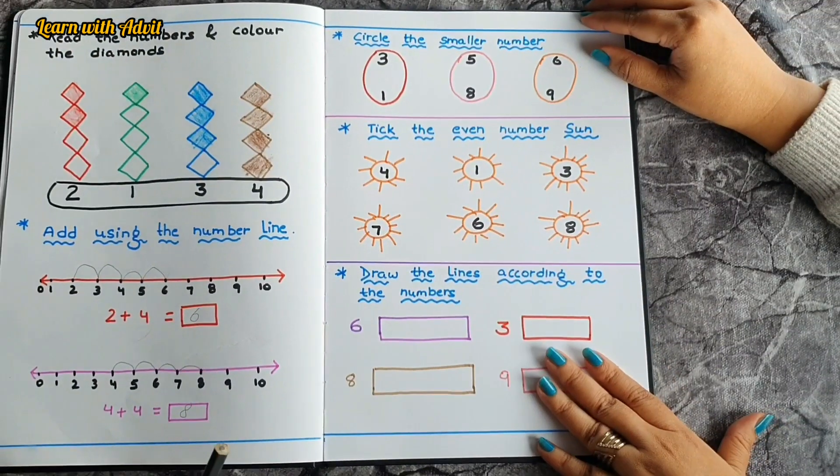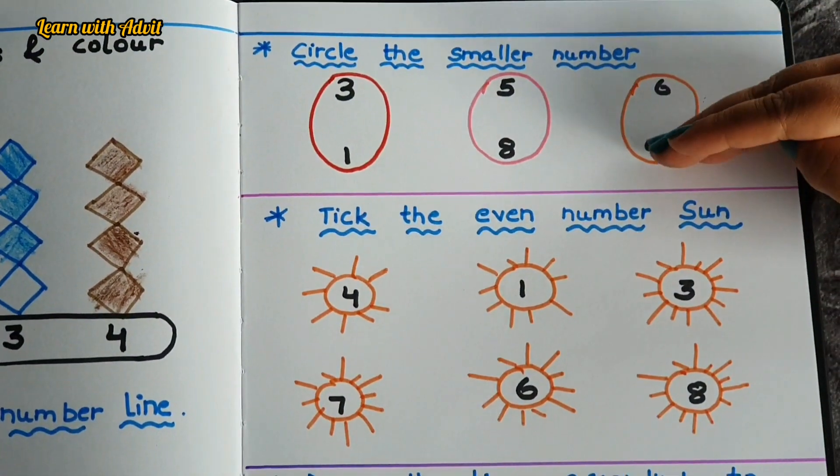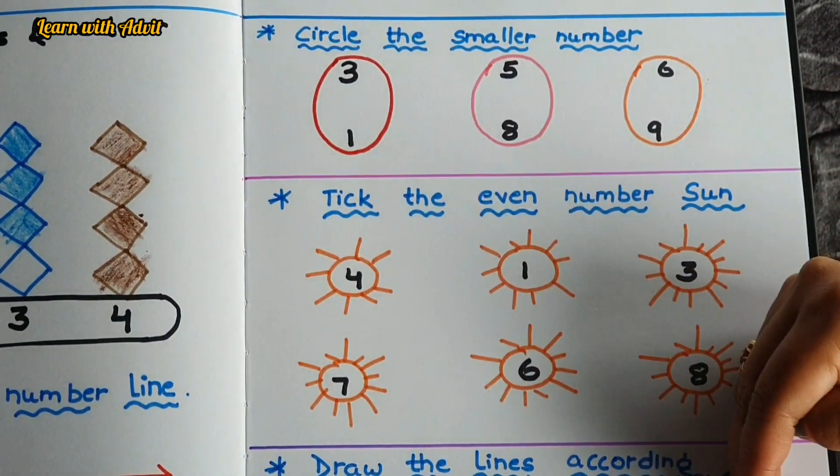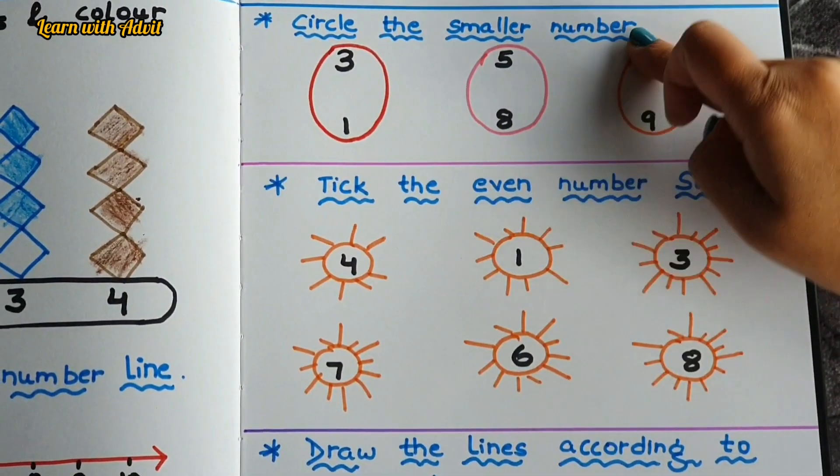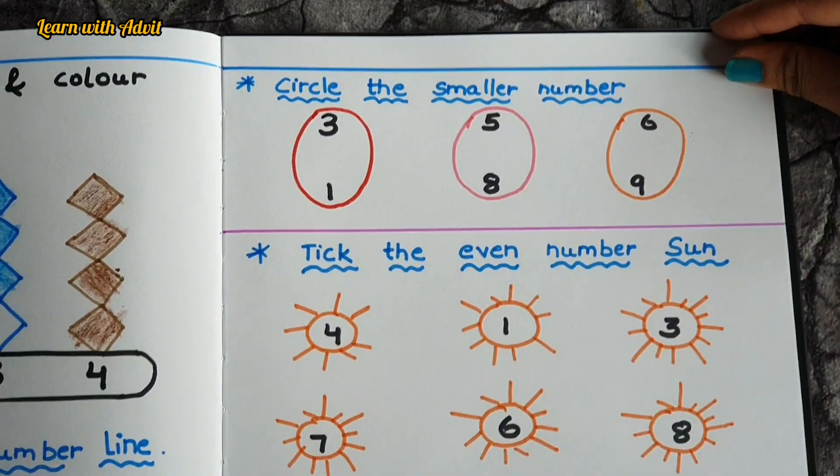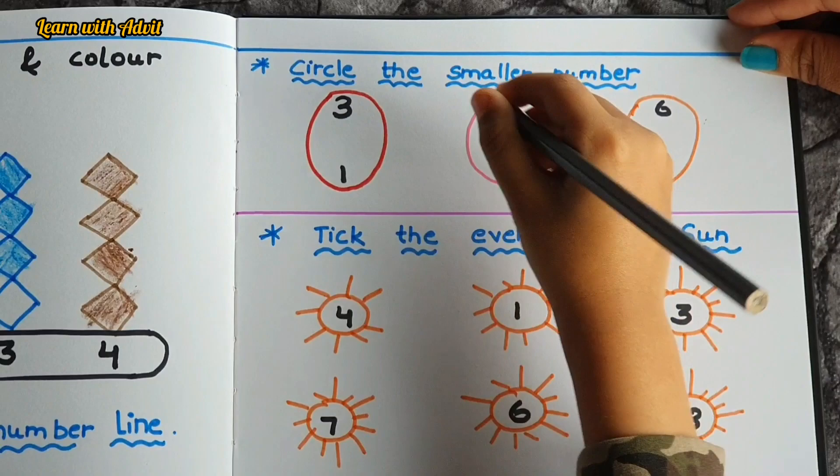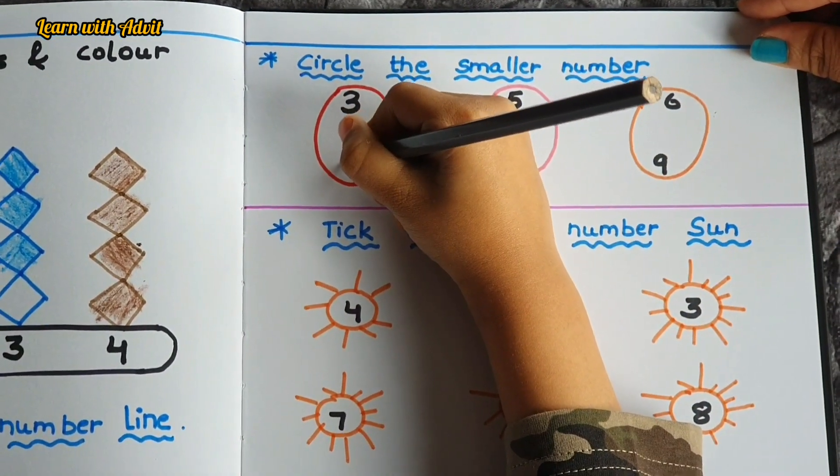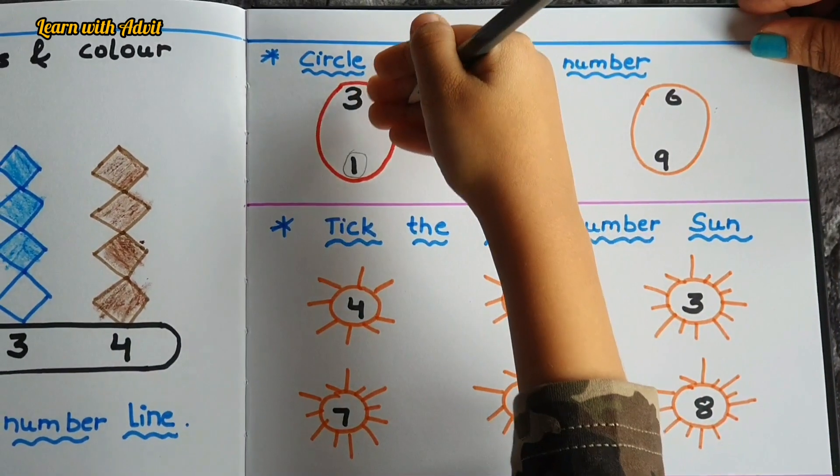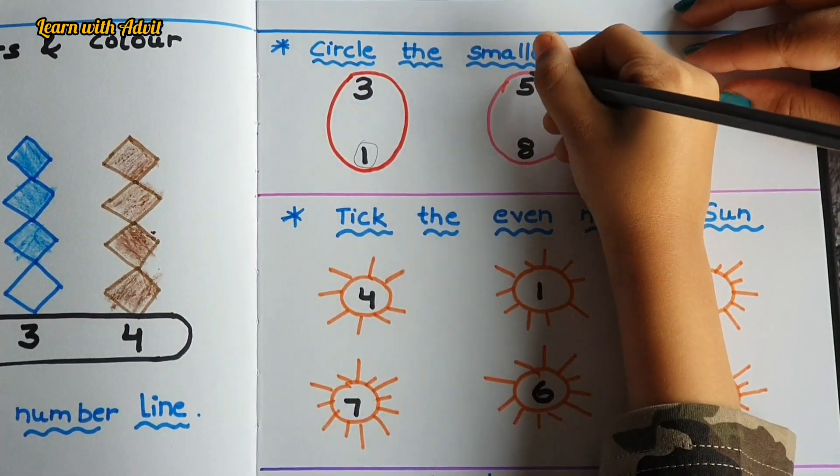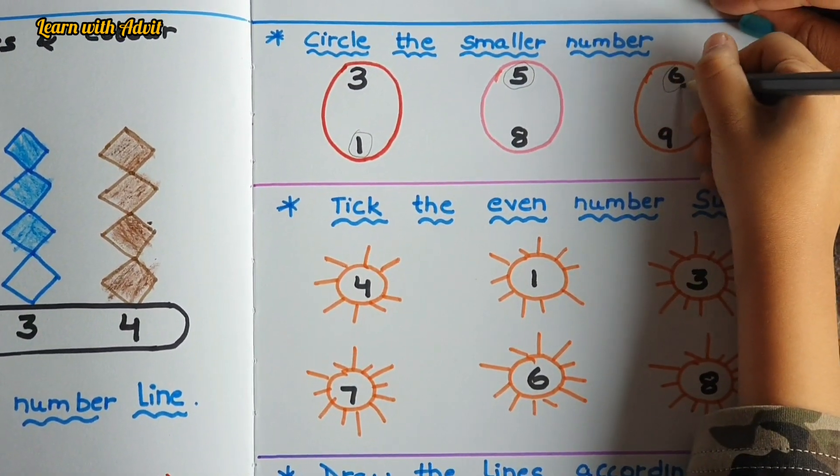In this sheet, I have shared about smaller number, even number, and draw the lines according to the numbers. So first, circle the smaller number. Look and circle the smaller number. Okay, now 1 is the smaller number, is less than 3. Yes. 5 is less than 8. Yeah. 6 is less than 9. Very good.